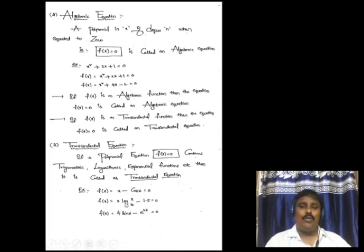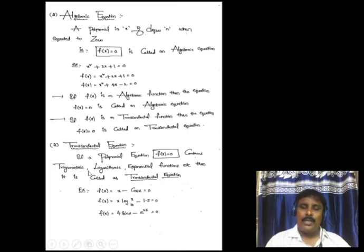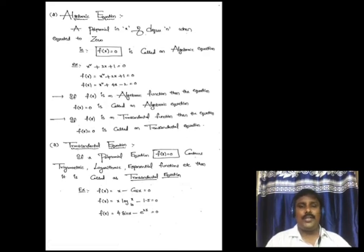The transcendental equation must contain trigonometric functions such as sine, cos, tan, etc., or logarithmic functions such as log(x) or log(eˣ), or exponential functions such as eˣ. For example: x - cos(x) = 0 contains trigonometric functions; the second example contains log; and the third contains exponential e^(2x), that is 4sin(x) - e^(2x). These are the three best examples of transcendental equations.